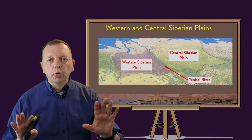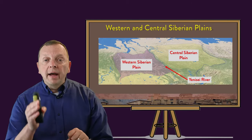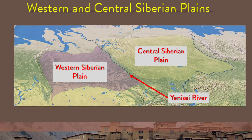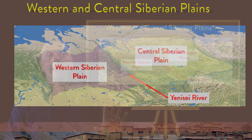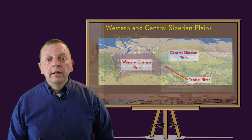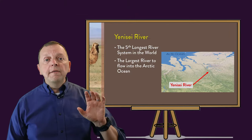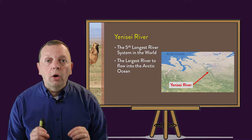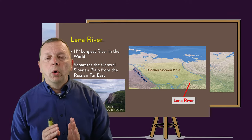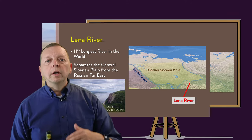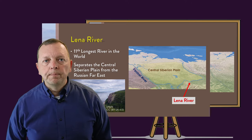Siberia is separated into two regions by the Yenisei River, with the western Siberian Plain lying west of the Yenisei and the central Siberian Plain to the east. The Yenisei River is the fifth longest river in the world, and is also the largest river that actually flows into the Arctic Ocean, which we find on the northern coast of Russia.